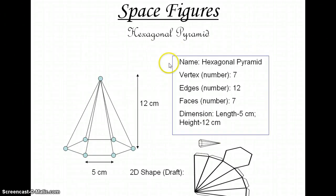Let's start. The name is hexagonal pyramid. It has seven vertices, they are shown with the blue circles. So we have one, two, three, four, five, six, and seven at the top. There are twelve edges, the edges are the black lines, so we have one, two, three, four, five, six, seven, eight, nine, ten, eleven, and twelve.